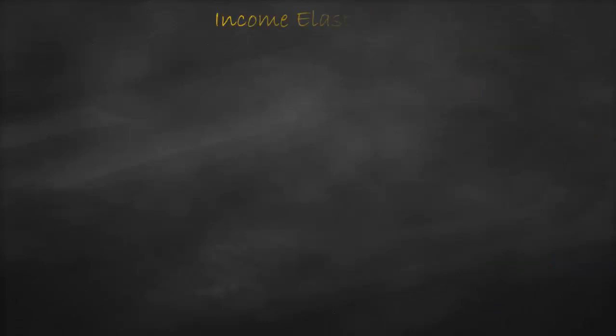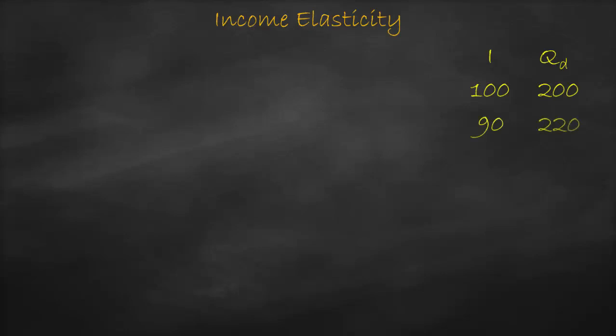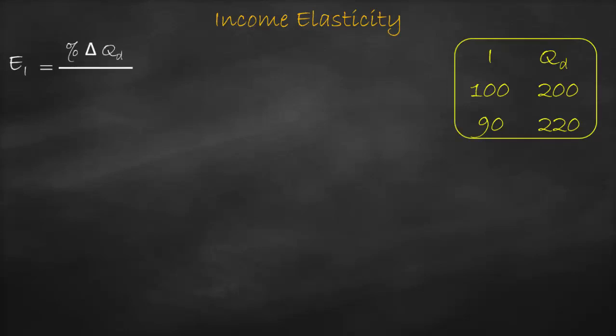Let's get another example where income decreases. Assume income is 100 and quantity demanded is 200. Income decreases to 90, and quantity demanded will increase to 220. As you can see, lower income increases quantity demanded — we have a negative relationship between income and quantity demanded, therefore these goods are inferior. Let's calculate it using income elasticity.